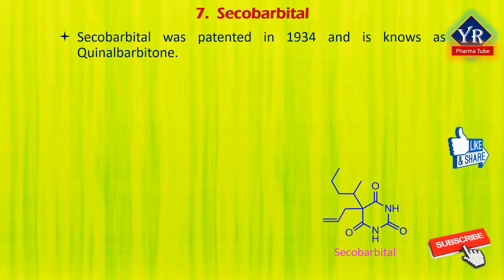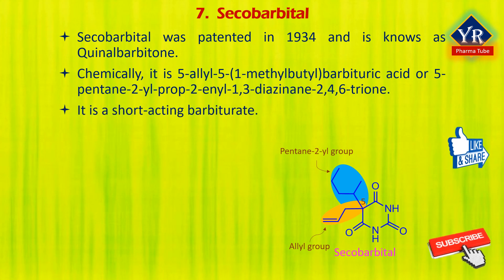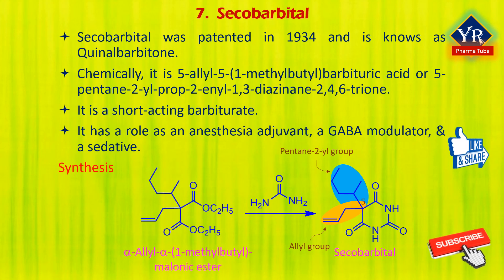The last drug is secobarbital, patented in 1934 in the US and commonly known as quinalbarbitone in the UK. It is chemically 5-allyl-5-(1-methylbutyl) barbituric acid or 5-pentan-2-yl-5-prop-2-en-1-yl-1,3-diazinane-2,4,6-trione. It is a short-acting barbiturate in which the hydrogens at C5 position are substituted by 2-propenyl and 2-pentyl groups. It has a role as an anesthesia adjuvant, a GABA modulator, and a sedative. Secobarbital is synthesized by the standard scheme of reacting alpha-allyl-alpha-(1-methylbutyl) malonic ester with urea.